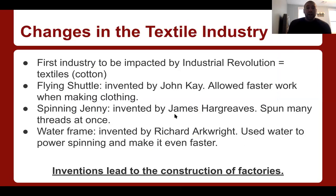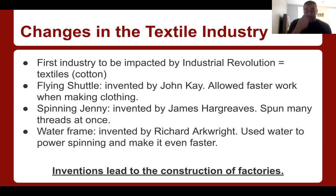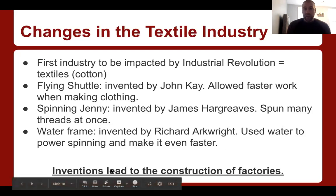Changes in the textile industry: the first industry to be impacted by the Industrial Revolution is textiles — cotton. The flying shuttle is invented by John Kay and allows work to be done faster when making clothes. The Spinning Jenny, another invention, was invented by James Hargreaves and spins many threads at once. Richard Arkwright invents the water frame, which used water to power spinning and make it even faster. These inventions directly lead to the construction of factories.